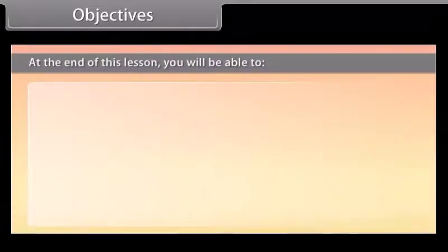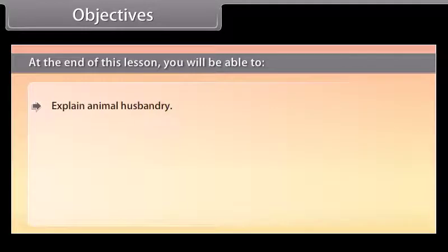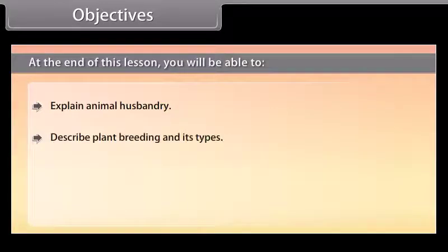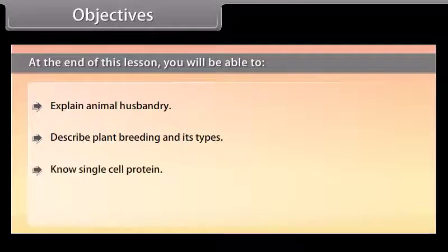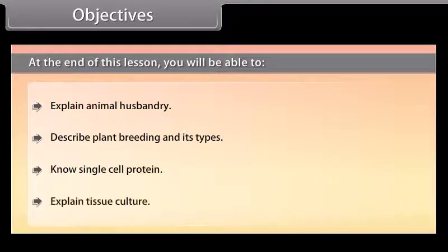At the end of this lesson, you will be able to: explain animal husbandry, describe plant breeding and its types, describe single cell protein, and explain tissue culture.